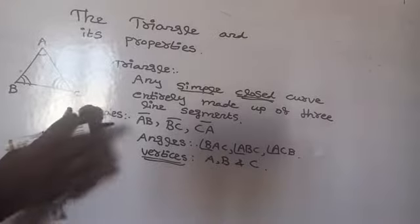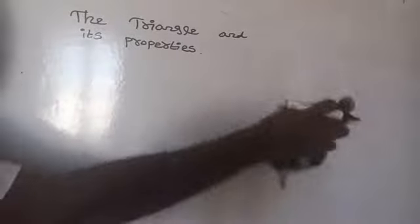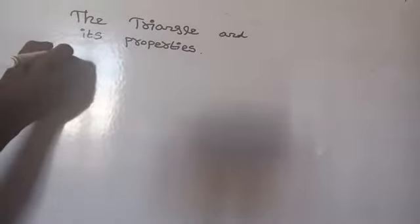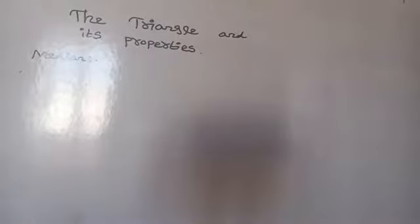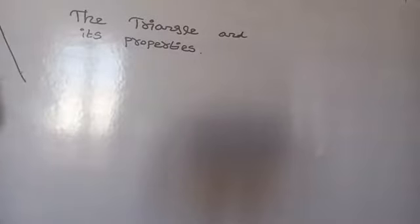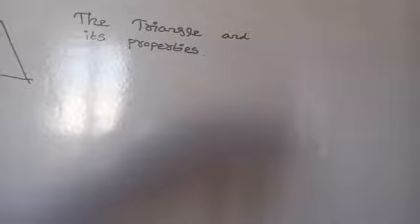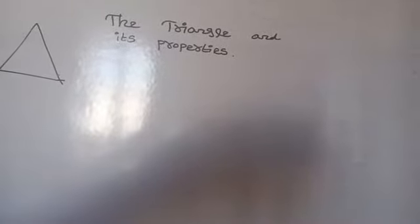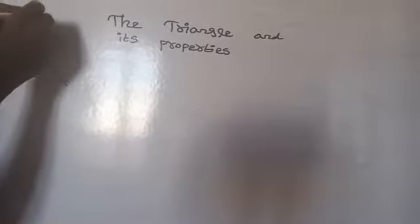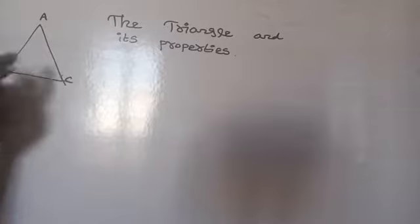Now let's go to the median. A median is the line segment joining from any vertex to the midpoint of the opposite side. For example, in triangle PQR, if M is the midpoint of QR, then PM is a median.